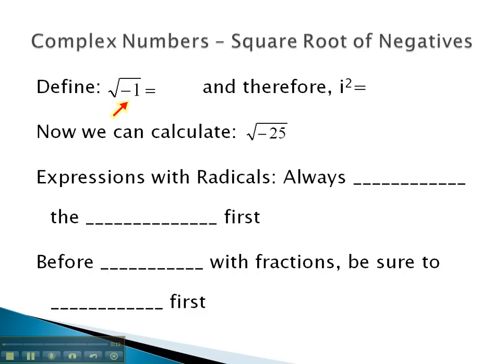So to make this solvable, what we will do is create a new type of number. We will call this number a complex number, which we will represent by the letter i. The square root of negative 1 is i, and if we square both sides, it will clear the square root, telling us that i squared is equal to negative 1.